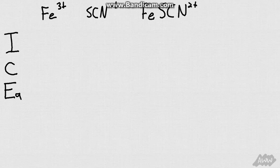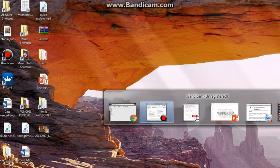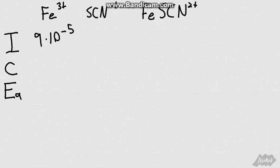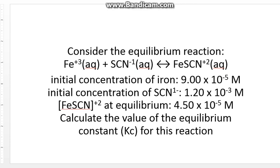Going back to our problem, we will see that we have an equilibrium reaction. So we start off with 9 times 10 to the negative 5th molar for our starting iron concentration. For our starting SCN concentration, we have 1.2 times 10 to the negative 3rd.